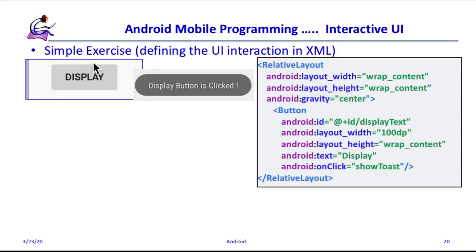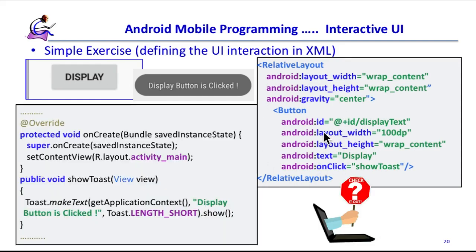This is the first procedure: defining the component. The second procedure is where the onClick action and the ID will be set. Finally, in the Java file you have to define the showToast method. If a button is clicked then call the showToast method — the same name must appear there. After onClick you define a public method whose return value is void.